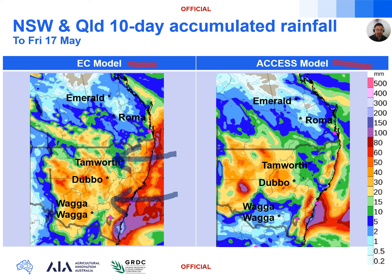We do see good consistency between the two models, where we're expecting between 20 to 40 millimetres over the next 10 days, but of course, right under storms or heavier showers, we could see heavier totals. The one area of difference we do see is over southern New South Wales, particularly the Riverina. The EC model does push rainfall down into northern Victoria and includes rainfall for places like Wagga, but the Access model is not at this stage indicating any rainfall over southern New South Wales and is mostly missing out.